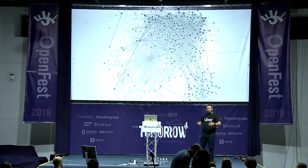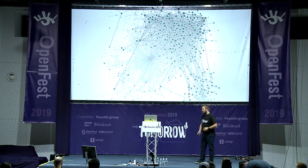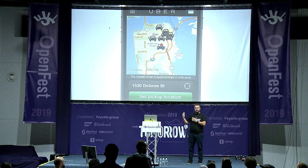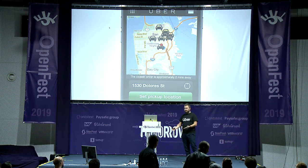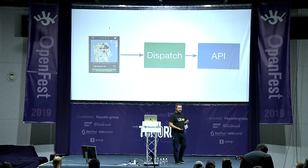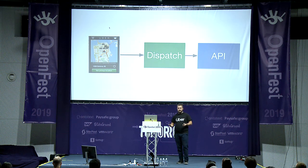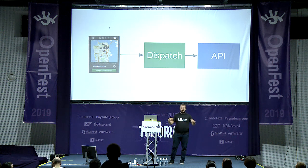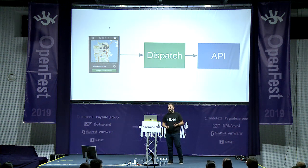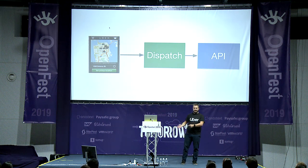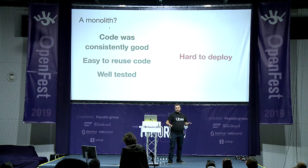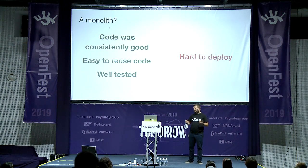First I'm going to start with a little bit of background. When Uber started, we didn't come up with 4,000 services on day one. Everything started with a simple application — this is the first version of Uber where you could just request a black car. There were two components: the first was a dispatch system communicating with mobile clients, doing the pairing of riders and dispatching drivers. The second was the API — one monolith containing all the backend business logic.